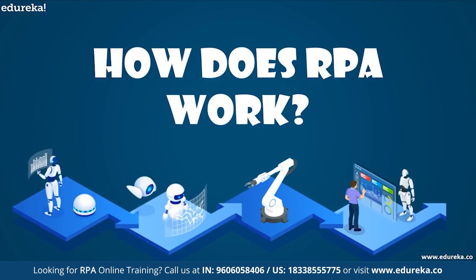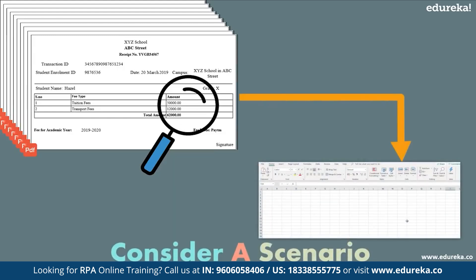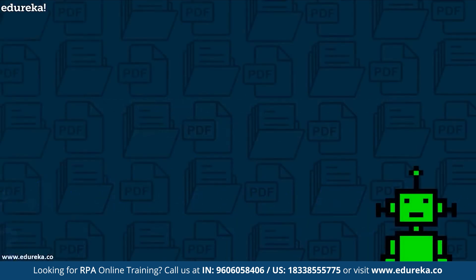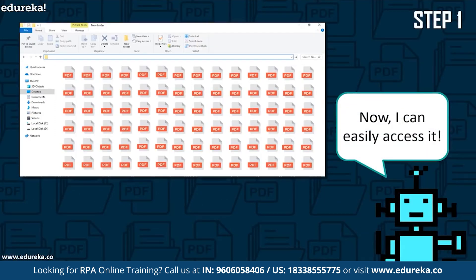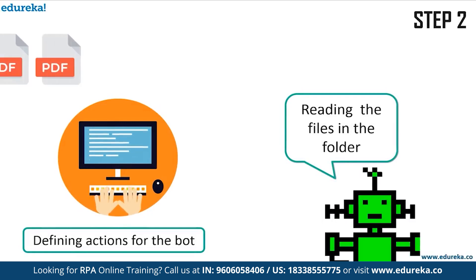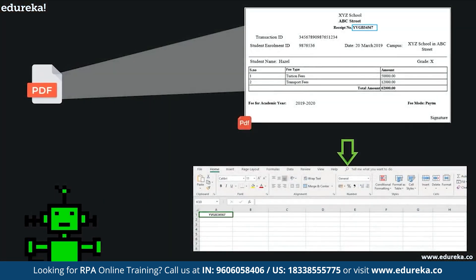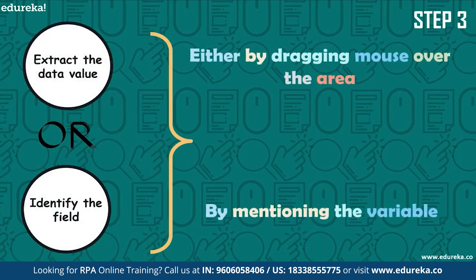Let's look at an example to understand how RPA actually works. Consider a scenario where you have to read hundreds of invoices and extract data from them to store into specific cells of an Excel file. The first step is to locate all the invoices to be processed in a single folder so the bot can easily access them. Then you define the bot's actions to read the files one after the other until all files are read. Once the bot starts opening files, it extracts specific data values. To do that, you design a step to identify the field from which you want to store the data, either by dragging your mouse over the area or by mentioning a variable.